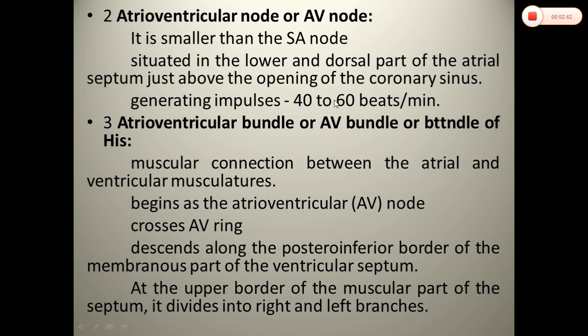The AV Node generates impulses at 40 to 60 beats per minute. Next is the Atrio-Ventricular bundle, also called the AV bundle or Bundle of His.